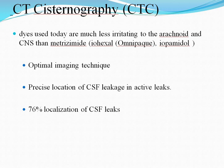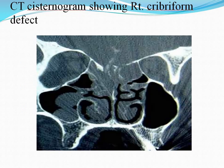In CT cisternography, dyes used today are much less irritating to the arachnoid and CNS than metrizamide; omnipaque, iohexol, and iopamidol are used. It is the optimal imaging technique, providing precise localization of CSF leakage in active leaks with 76% localization of CSF leaks. This is the CT cisternogram showing the right cribriform defect, which we can see here.